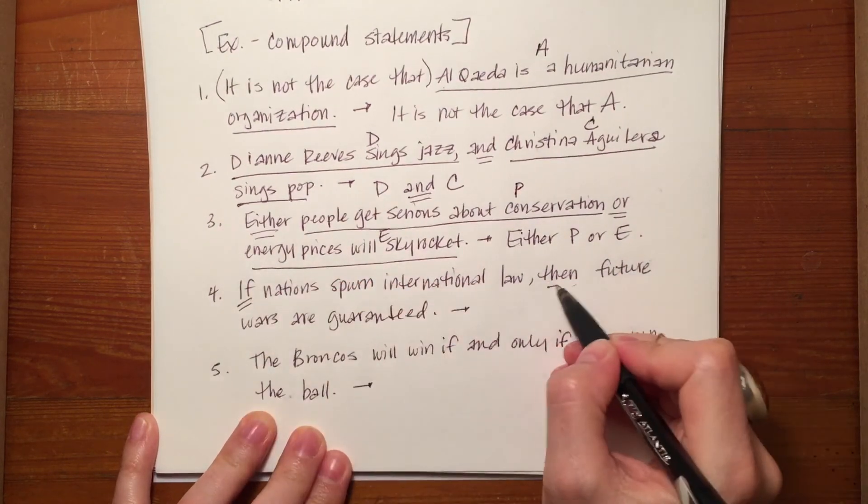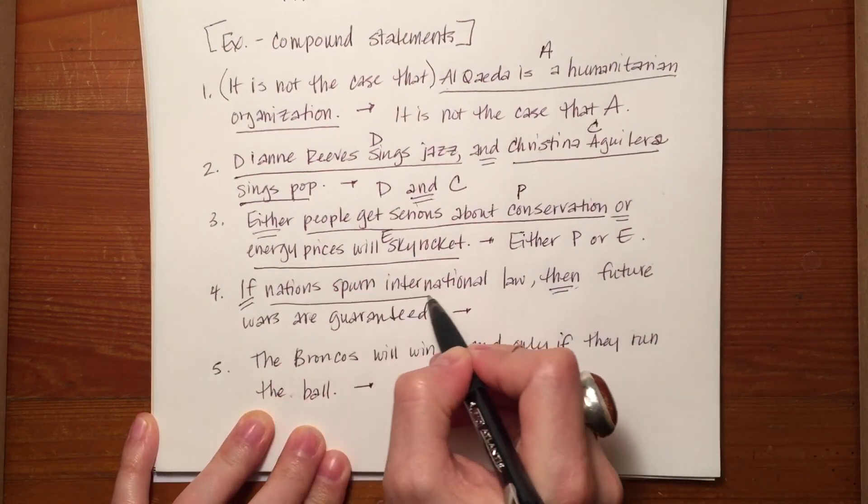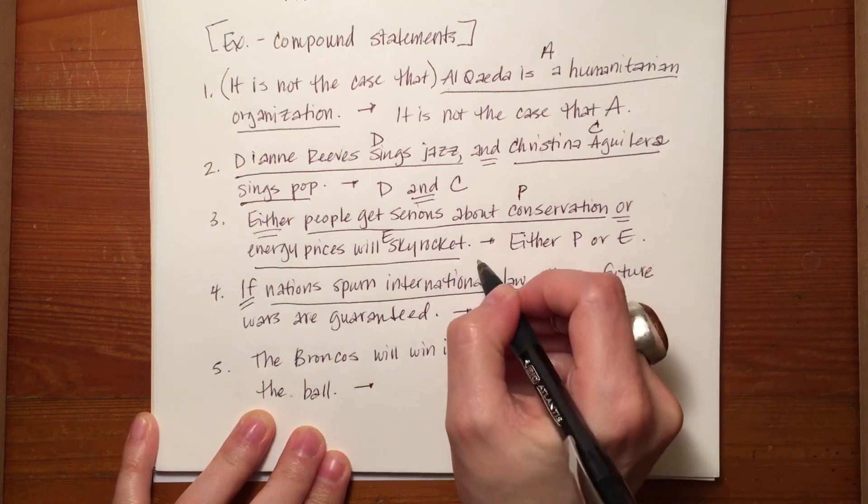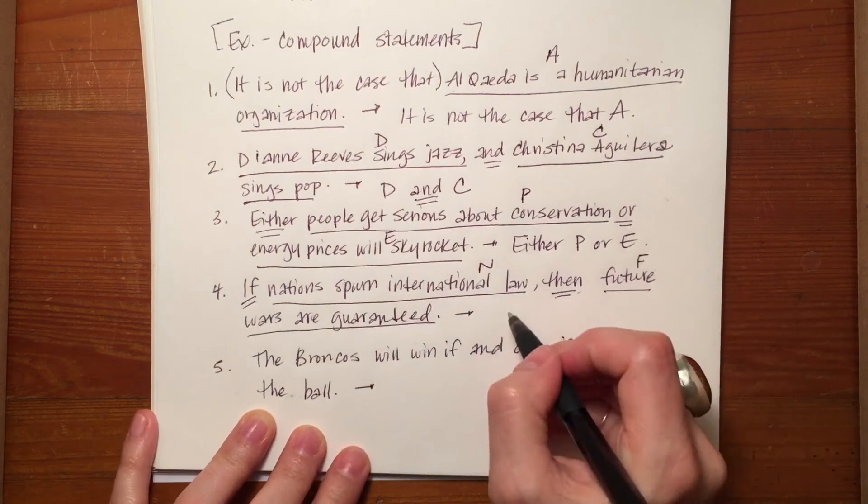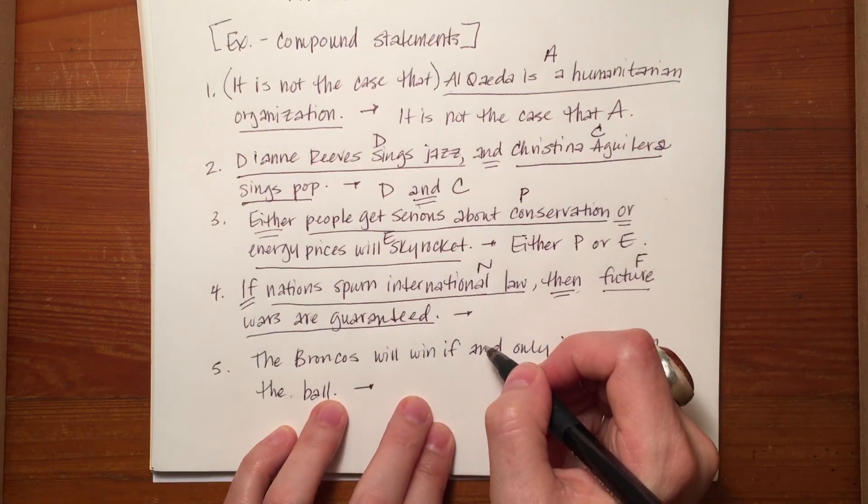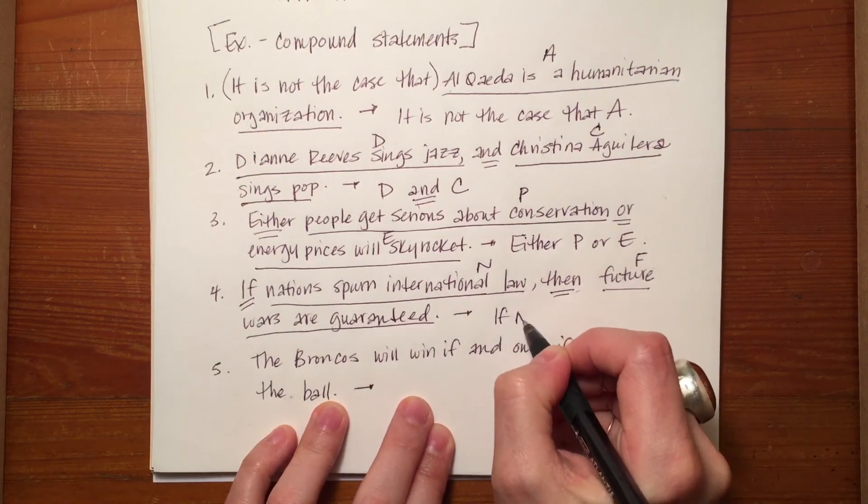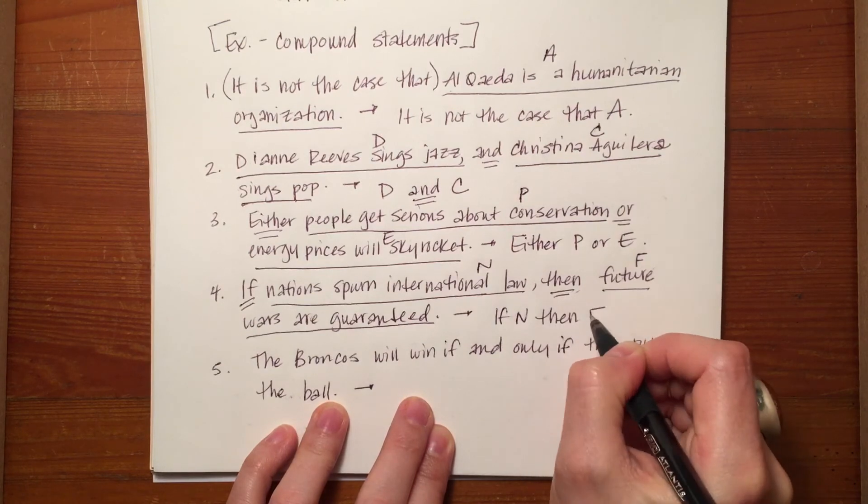Then here we have an if then. If nations spurn international law, let's call that N, then future wars are guaranteed, F. So N, if N, then F.